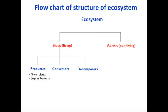Examples of such bacteria include sulfur bacteria — including sulfur oxidizing bacteria and sulfur reducing bacteria — as well as nitrifying bacteria. So green plants and some categories of bacteria are kept under the subcategory of producers.